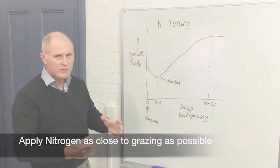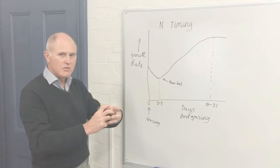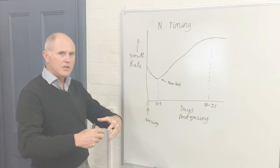The reason for that is if you put on nitrogen at the time of grazing or just after grazing, the nitrogen itself takes a few days to dissolve. It takes about 48 hours for the urea coating to dissolve, for the urea to actually dissolve onto the surface of the soil, then enter the soil and become available to the plant roots.